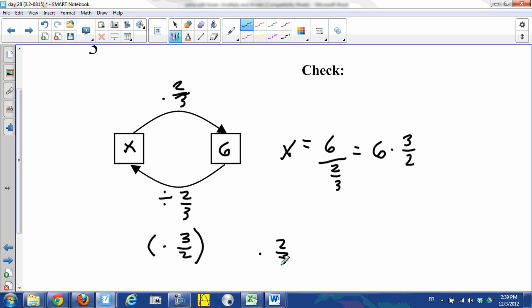Their product is the multiplicative identity, one. So x times two-thirds times three-halves gets you back to x. So we need to calculate six times three-halves.